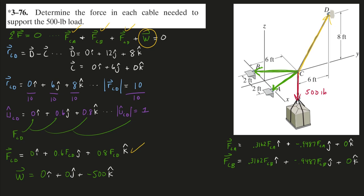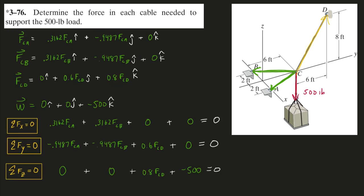I just have to add up all of these force vectors by adding up their components and set each one equal to 0. So here are the sum forces X, Y, and Z equations. So we have three equations. We have three unknowns, FCA, FCB, and FCD.